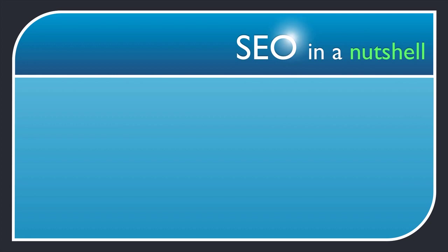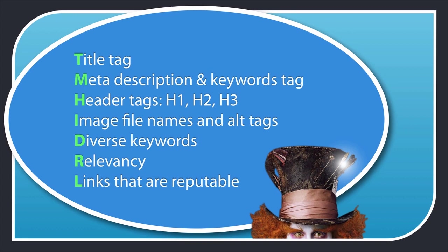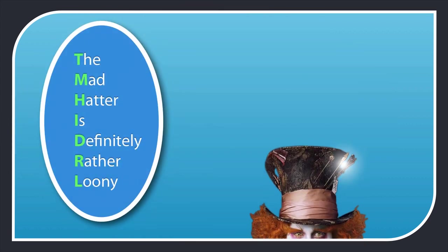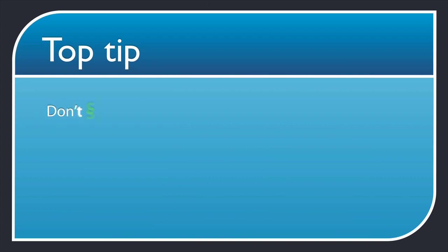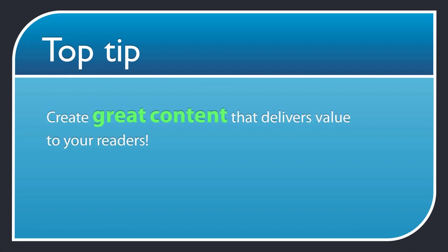So here's a quick recap. Remember the Mad Hatter and his cups of tea? The Mad Hatter is definitely rather loony — a quick reminder of how you SEO a web page: T for title tag, M for meta tags, H for header tags, I for images, D for diverse keywords, R for relevancy, and L for reputable links. And if there's one final tip I can give you, it's this: don't stress about SEO. Lightly implement this method and then forget about SEO and instead focus on delivering value to your readers. Too much focus on SEO means you won't be able to make the connection with your readers. But writing great content that adds value to their lives will help make that connection and bring you the traffic you need.